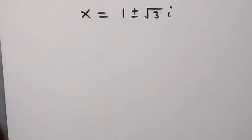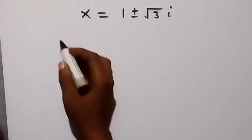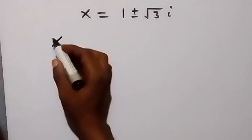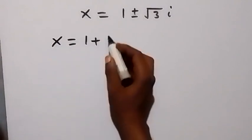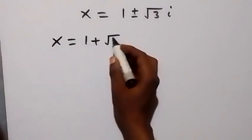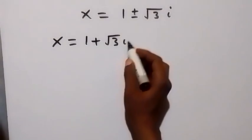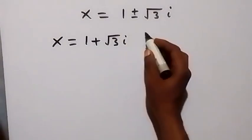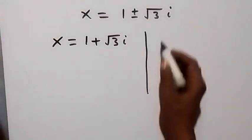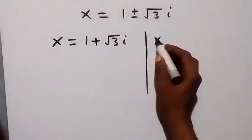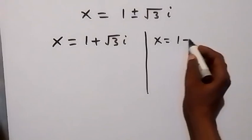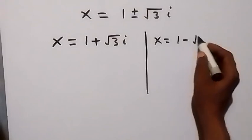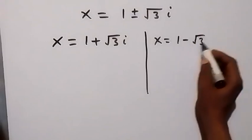So here we have x equals to 1 plus or minus root 3i. We have two possible solutions: the first one is x equals to 1 plus root 3i, and the second one is x equals to 1 minus root 3i.